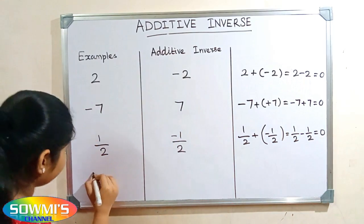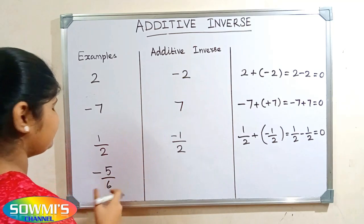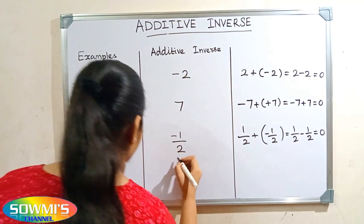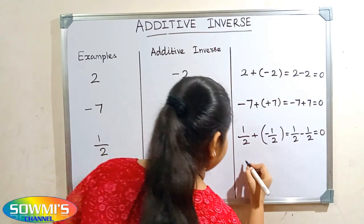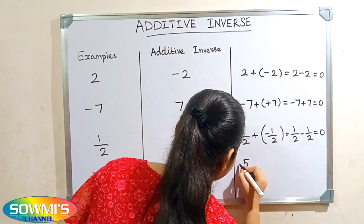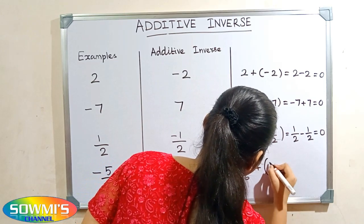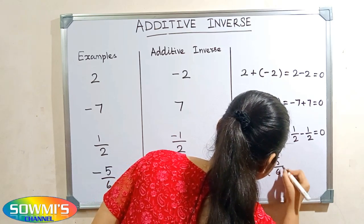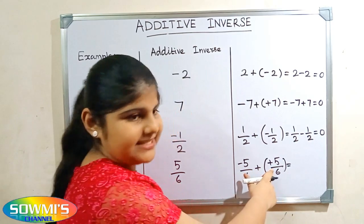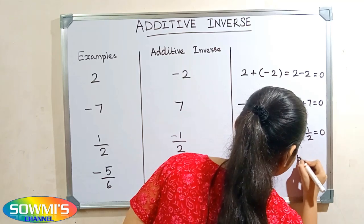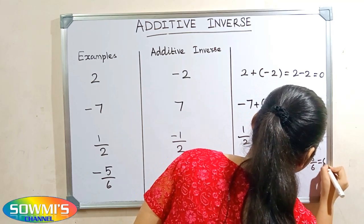Next we will take minus five by six. The additive inverse of minus five by six is five by six. According to the property, minus five by six plus five by six — plus into plus will be plus — so minus five by six plus five by six is equal to zero.